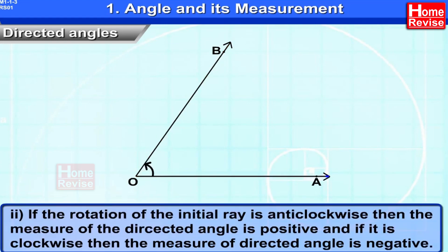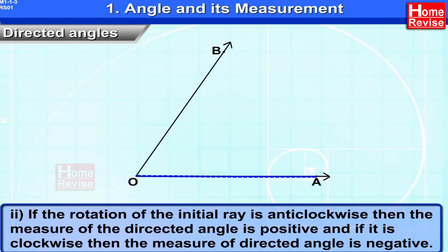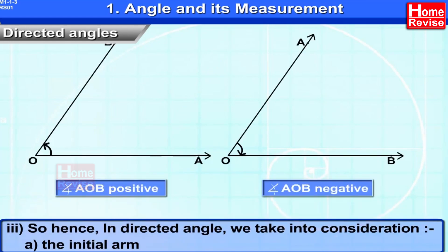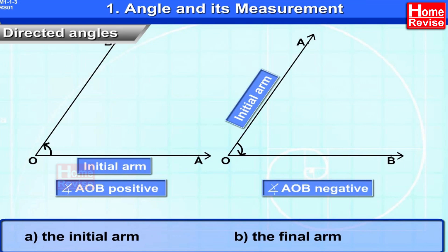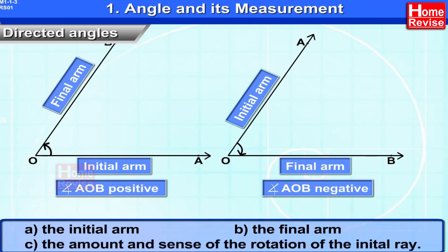If the rotation of the initial ray is anticlockwise, then the measure of the directed angle is positive. If it is clockwise, then the measure of the directed angle is negative. In a directed angle, we take into consideration: A, the initial arm; B, the final arm; and C, the amount and sense of the rotation of the initial ray.